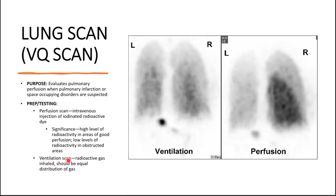For the ventilation scan, radioactive gas is inhaled, and then a scan is done looking for equal distribution of the gas in the lungs. Anywhere there is obstruction or abnormality, there will be an uneven distribution of gas in that part of the lungs.